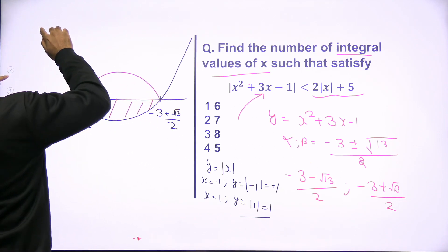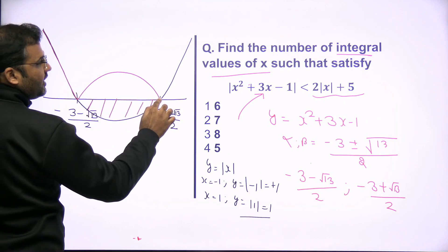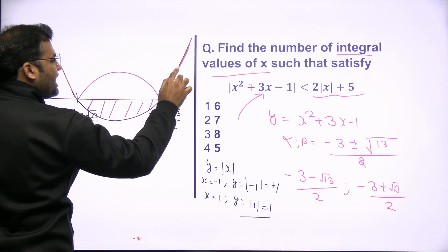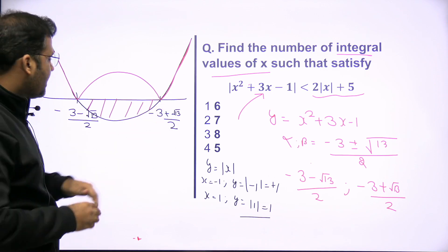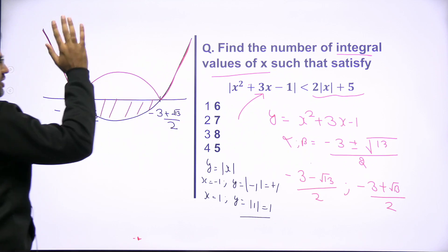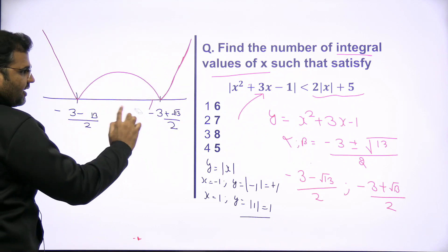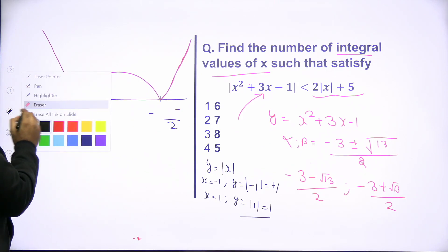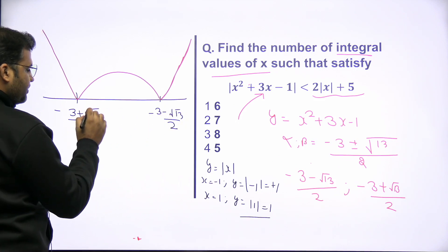That is the graph of x squared plus 3x minus 1. The red graph is y equals x squared plus 3x minus 1. If I apply the definition of mod, the values which are on the negative side will now be shifted to the positive side. So finally, our graph of the left-hand side expression looks like a W-shape, with the two roots at minus 3 minus root 13 over 2, and minus 3 plus root 13 over 2.